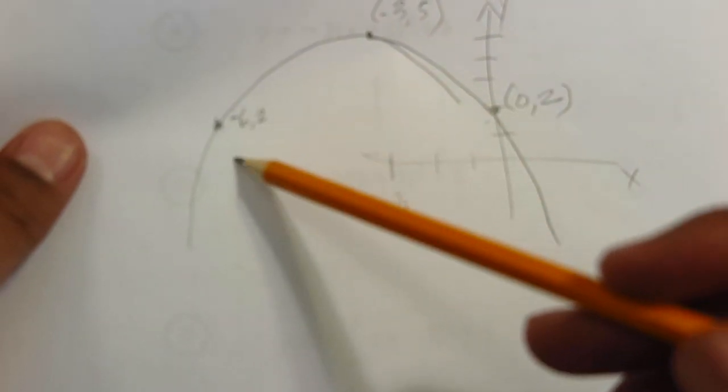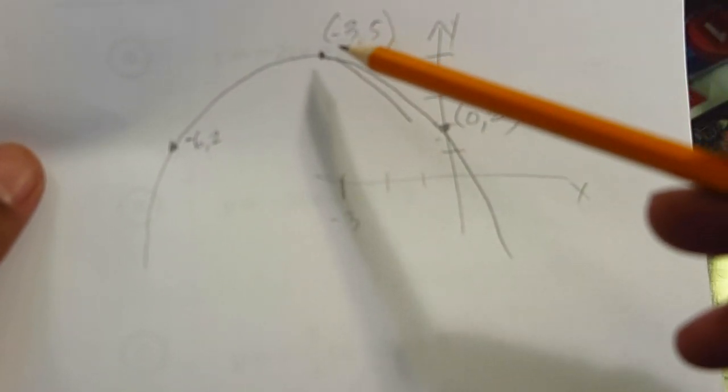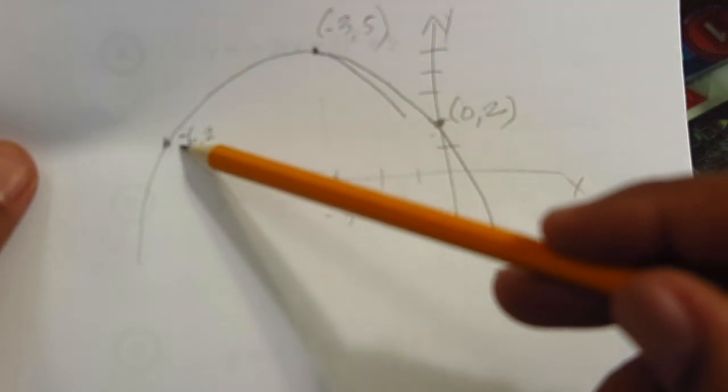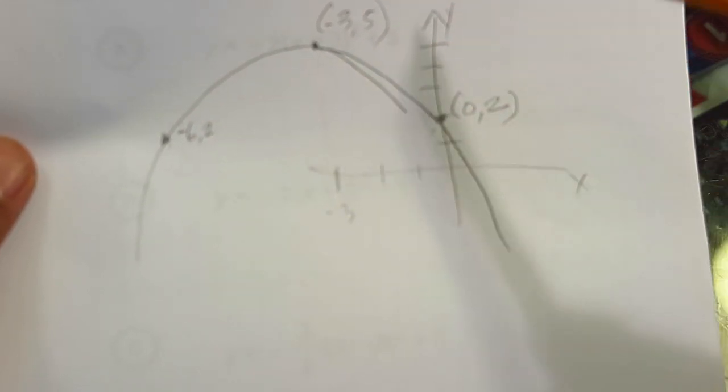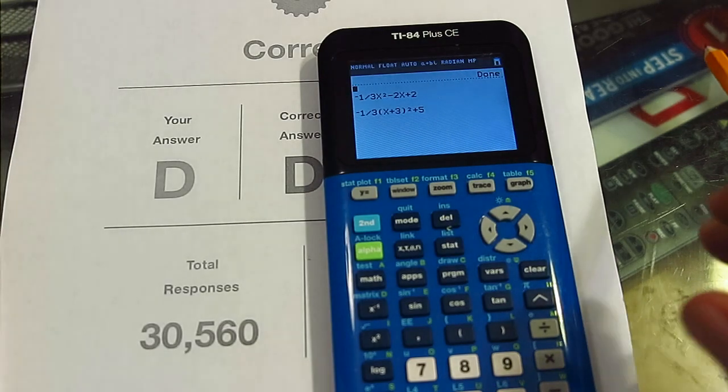Basically the only thing that you really need to know is how to find a third point. But that's pretty easy using the symmetry and we know the vertex is here. We know that the y-intercept is here. So we can go over 3 to the left of the vertex and find the corresponding symmetrical point. But once you know that, it's pretty easy to do.